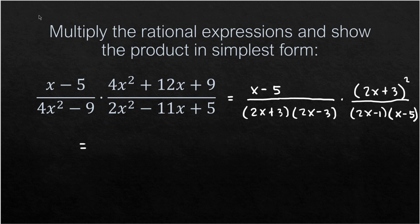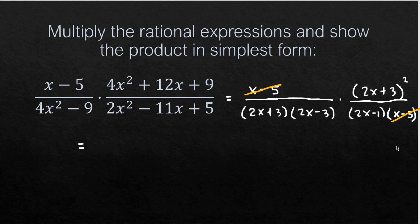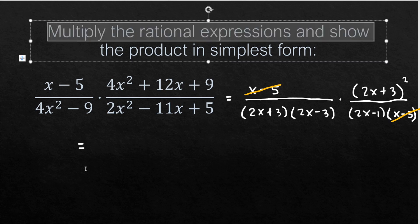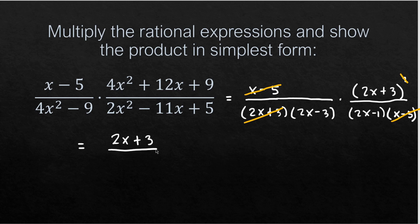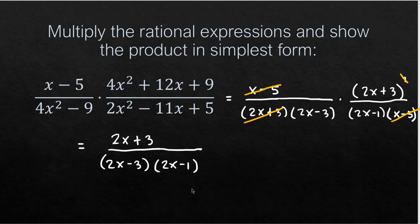Now we cancel common factors. The factor (x-5) appears in both the numerator and in (2x-1)(x-5), so those cancel. The factor (2x+3) appears twice in (2x+3)² and once in (2x+3)(2x-3), so one (2x+3) cancels. What remains is (2x+3) all over (2x-3)(2x-1). That is the simplified form of the rational expression, and that's it for multiplying rational expressions.